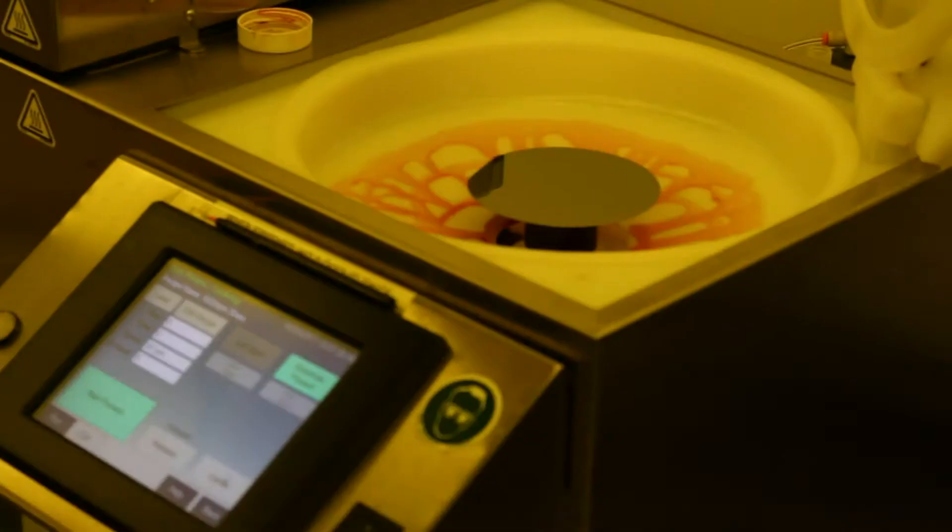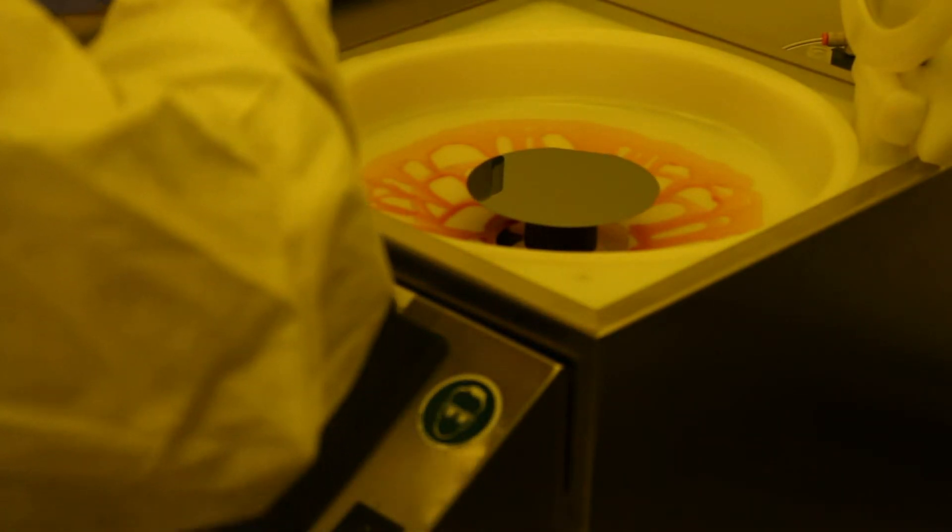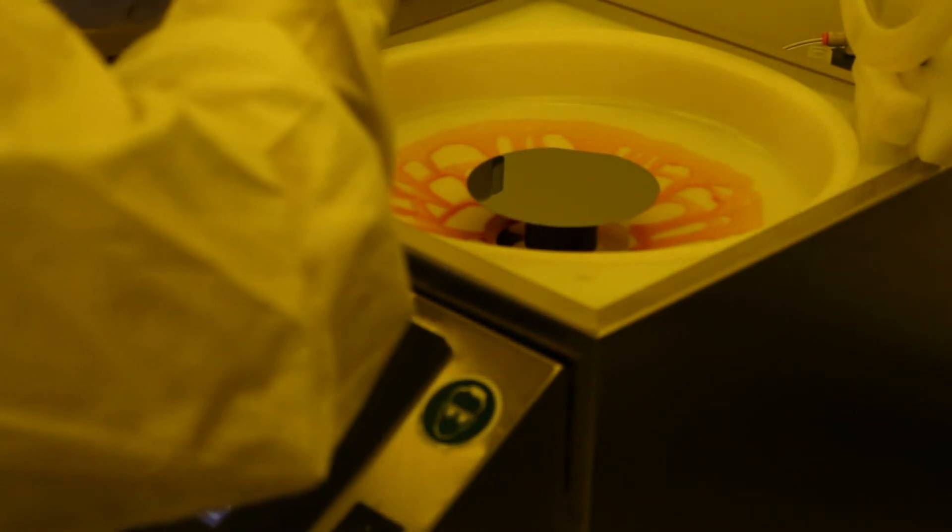The first thing we'll do is put the wafer on. We'll center the wafer on the chuck using the centering device. Check for centering. And then Kerry will go ahead and dispense the HMDS on the wafer, spinning it at 3000 RPM for 30 seconds.